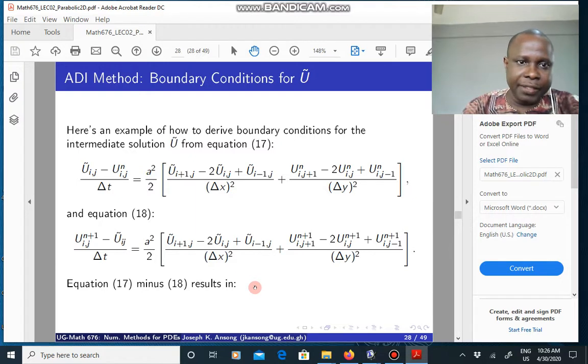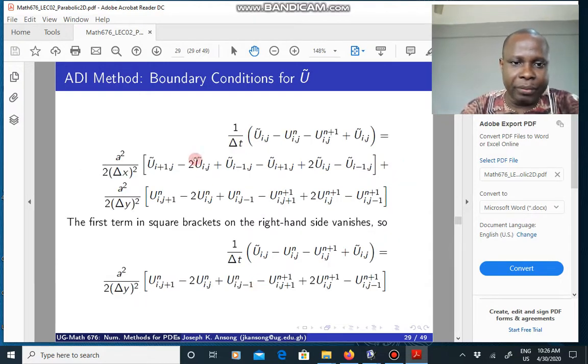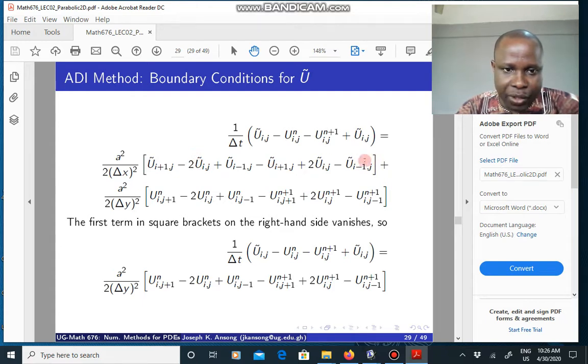When you do that, you end up with this long equation here. But what you notice is that this term actually cancels out. All of this term cancels out. That is because this tilde and that tilde cancels out. The minus 2 U tilde and plus 2 cancels out. And then U tilde_{i-1,j} and this guy also cancels. So, this goes to 0. And then you are left with this expression here.